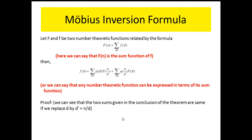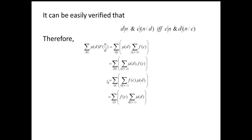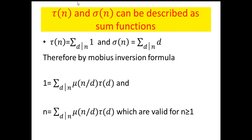Recall what the Möbius Inversion Formula says: if F is the sum function of f, then f can be written in terms of F. Here we first wrote τ and σ as sum functions, and then by the inversion formula we obtained 1 = Σ μ(n/d)·τ(d) and n = Σ μ(n/d)·σ(d).